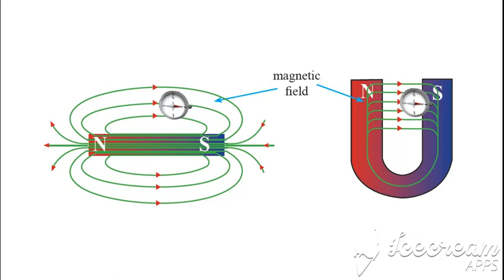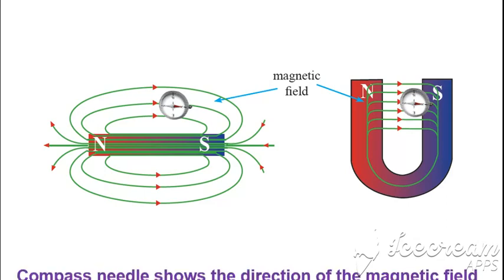Okay, so we can use this compass to find the direction of the magnetic field.